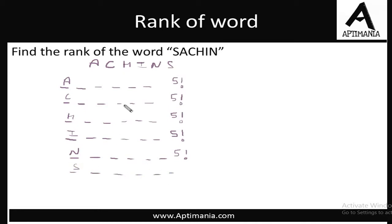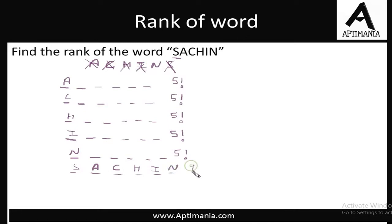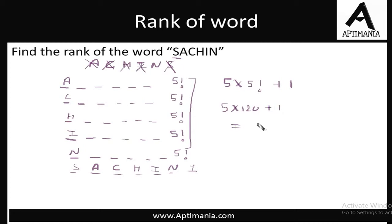S is required at the first position, so we fix it and cancel it. We move to the next letter: A — also required, fix it. Then C — also required, fix it. Then H — also required, fixed. Then I — also required, fixed. And finally N — so we count this as one case. In total we have 5 times 5 factorial, which is 5 × 120 = 600, plus 1. So the rank of Sachin in the dictionary is 601.